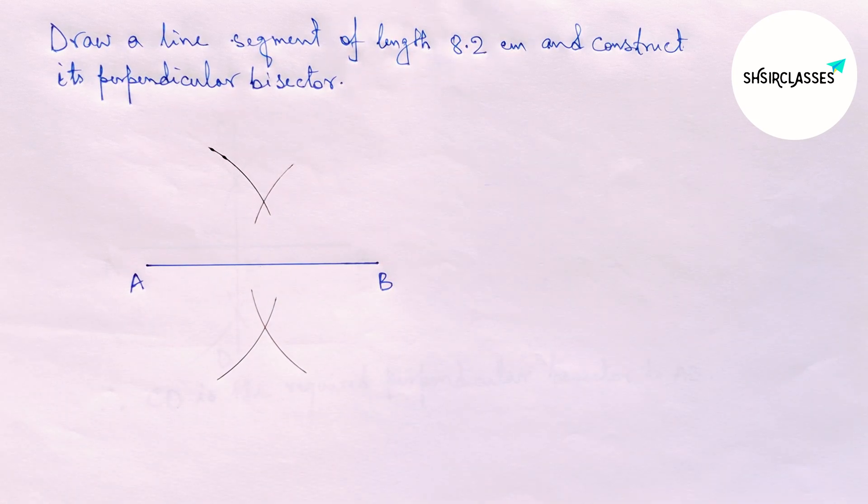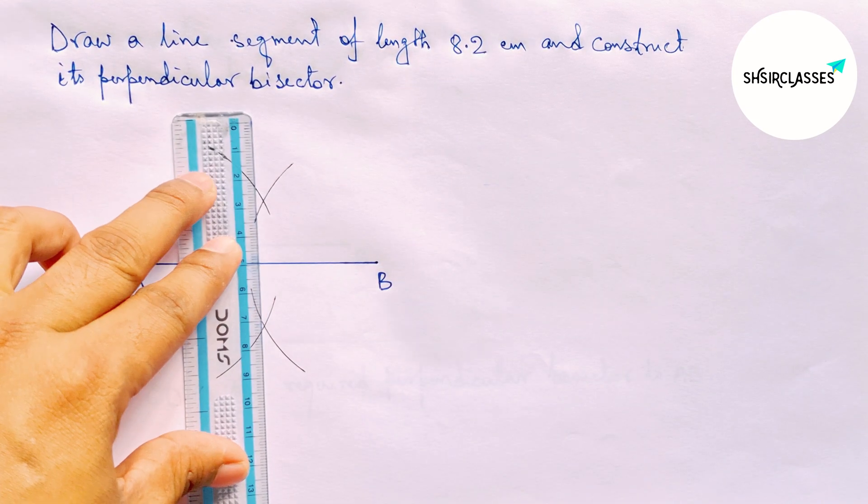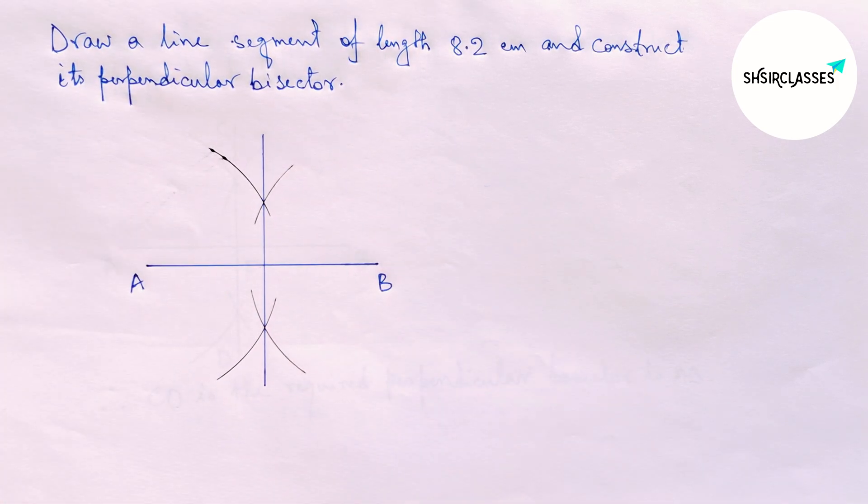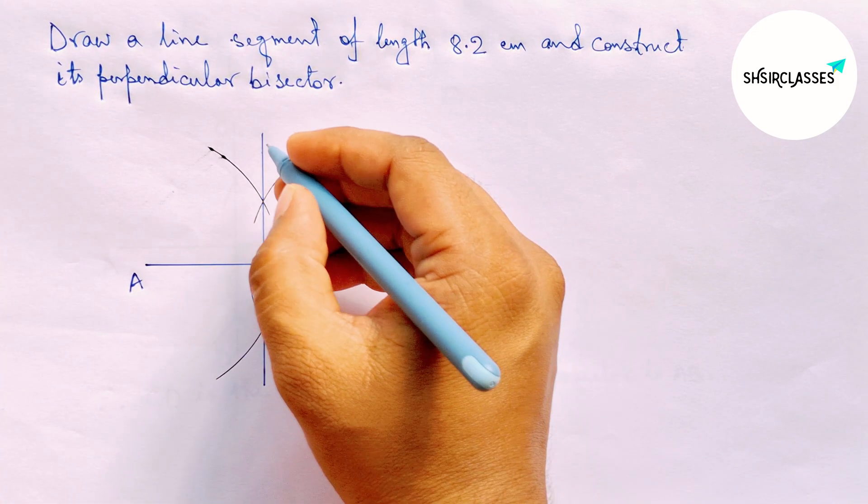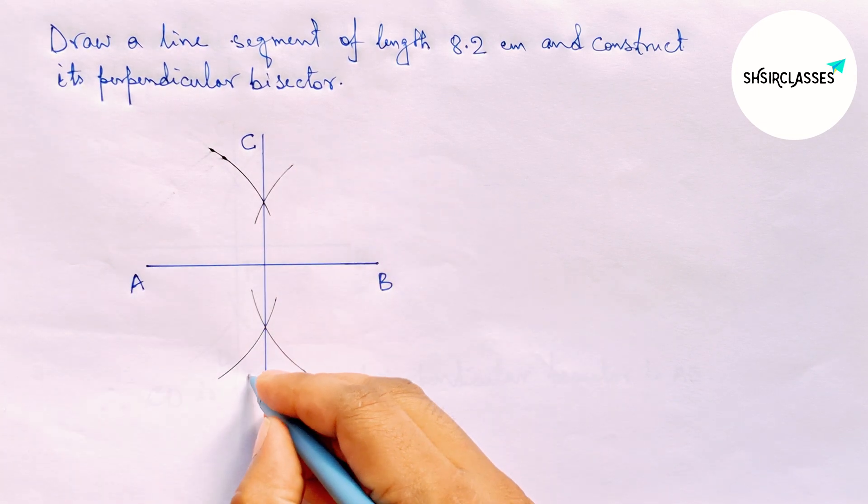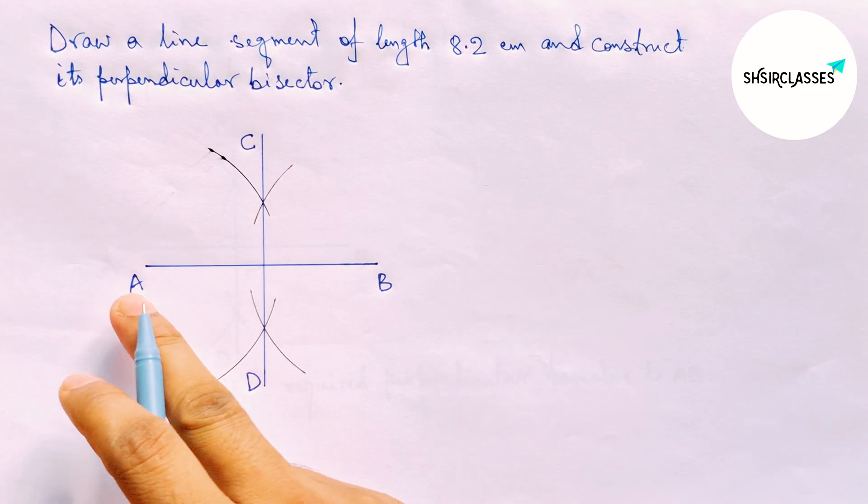Now join these points. This is the required perpendicular bisector, so labeling here C and D.